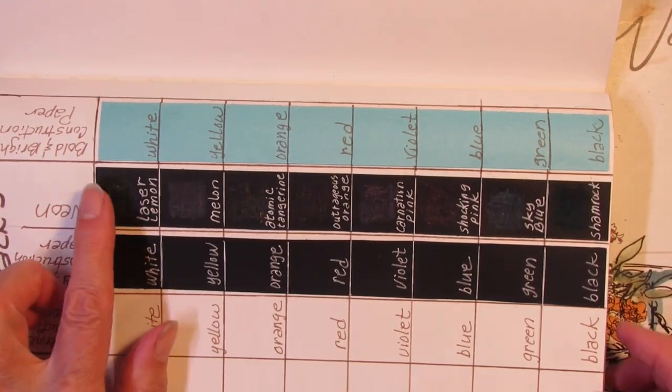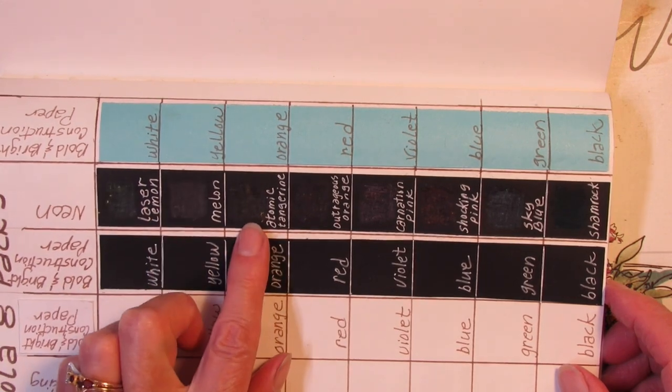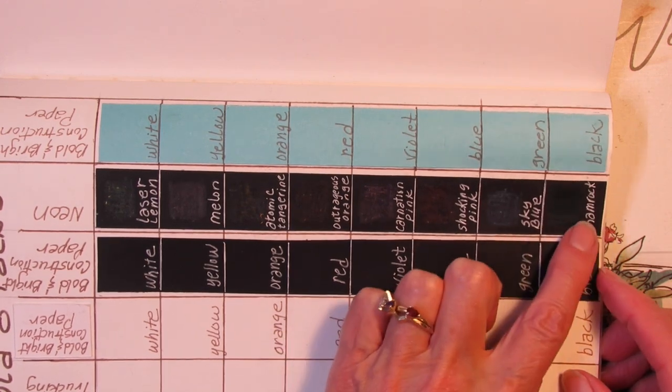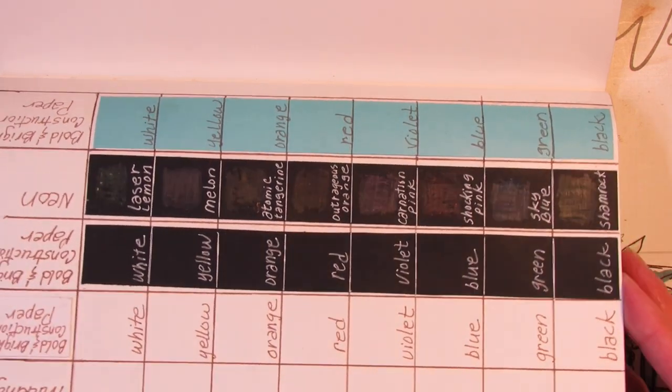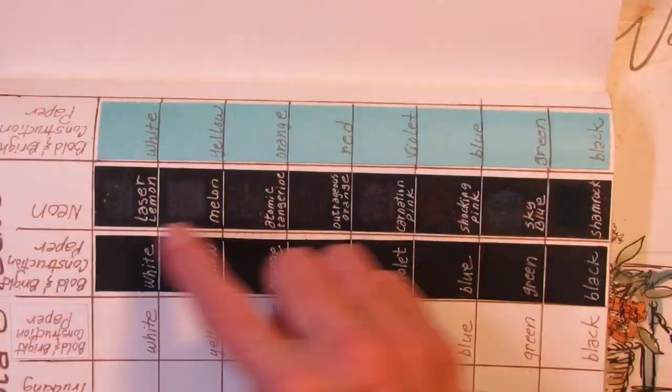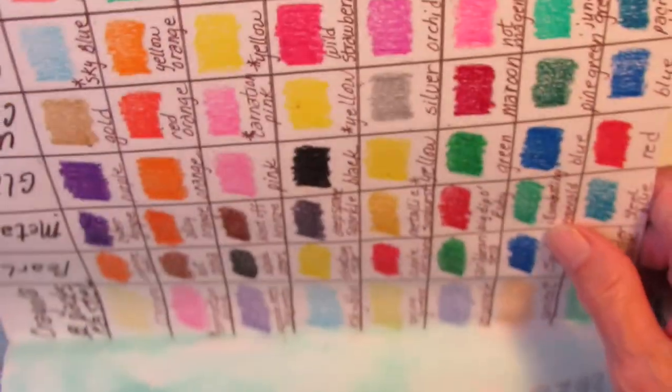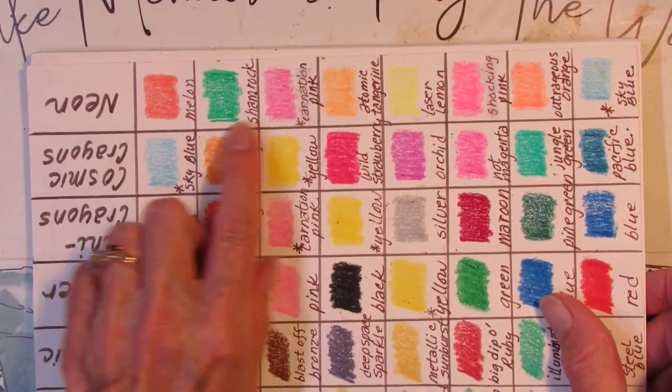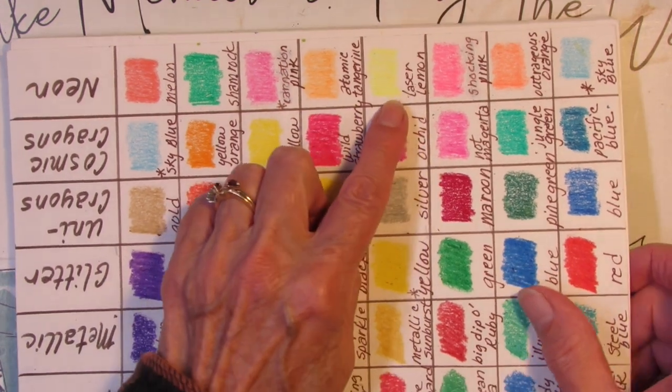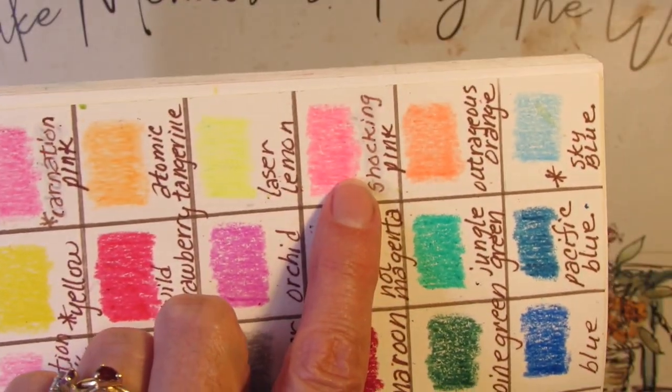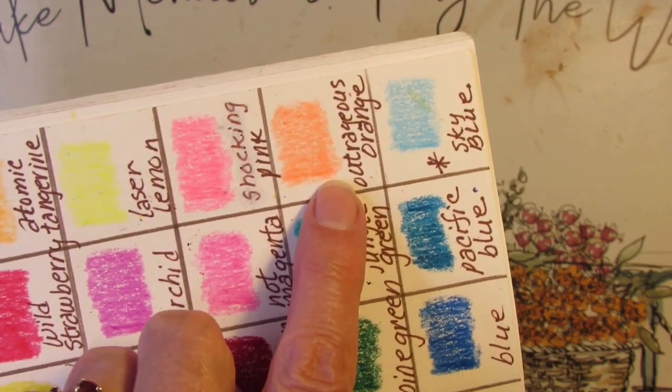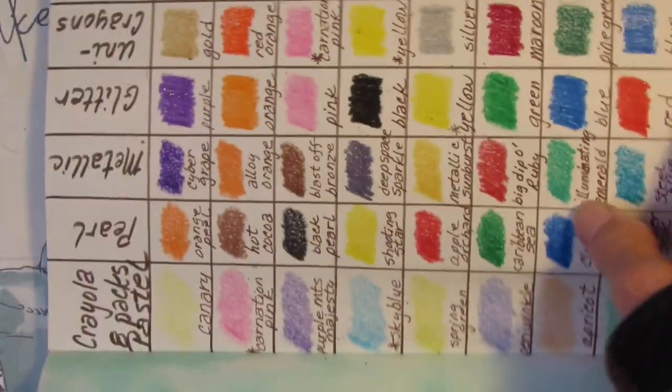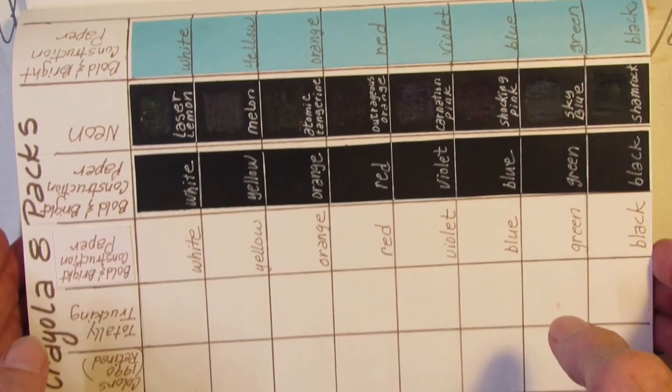Shamrock. So, Laser Lemon, Melon, Atomic Tangerine, Outrageous Orange, Carnation Pink, Shocking Pink, Sky Blue, and Shamrock. These are the neon crayons. And that's what they look like on black. And the same colors over here. Melon, Shamrock, Carnation, Atomic Tangerine, Laser Lemon, Shocking Pink, Outrageous Orange, and Sky Blue. That's what they look like on the white. So, now comes the big reveal. How are they going to compare with the Bold and Bright Construction Paper Crayon? Specially formulated.